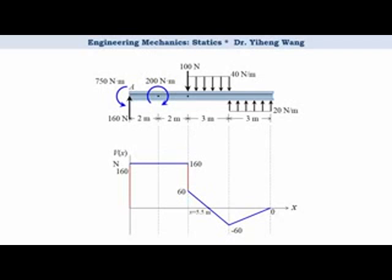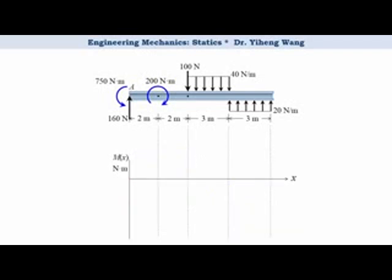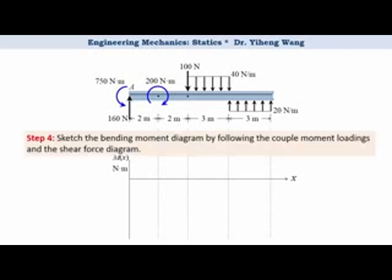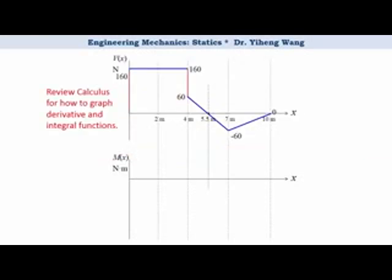Pay attention to the point where shear force is 0, because as you learned from calculus, this critical point corresponds to either a local maximum or a local minimum bending moment — and we are always interested in knowing the maximum bending moment in the member. In step 4, we use the couple moment loading information on the member and the shear force diagram to complete the bending moment diagram. There are two couple moments on the member which will correspond to step changes in the bending moment diagram. If you are not sure which direction the step change goes, just do a quick method of sections analysis. We use the shear force diagram values — since they correspond to slopes of the bending moment diagram — take into consideration the step changes, and complete the bending moment diagram.